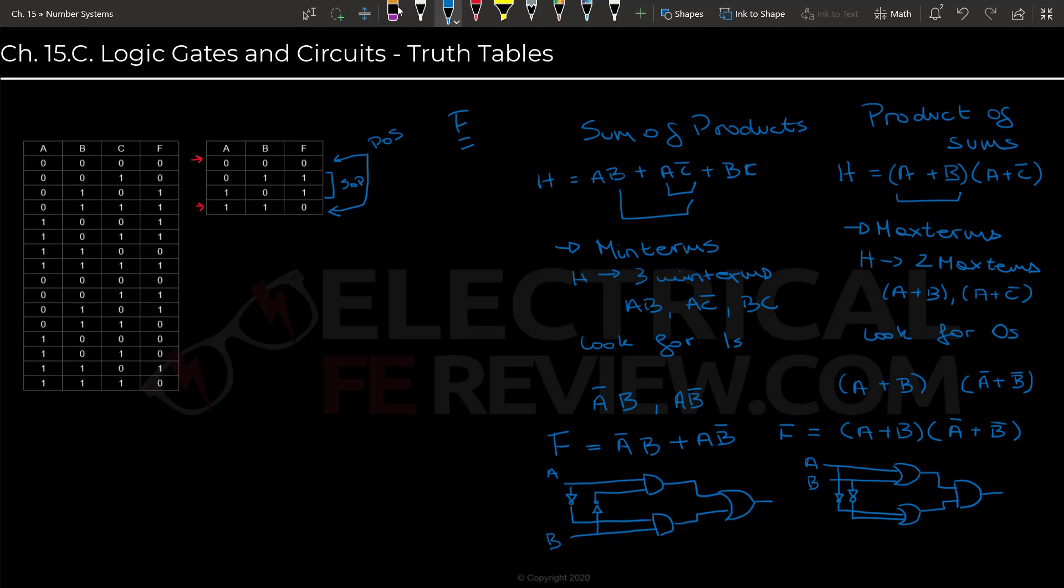And here we'll do the same thing. And those are our circuits. So basically using IC chips, we could build this and get our desired output of F, which is really cool.